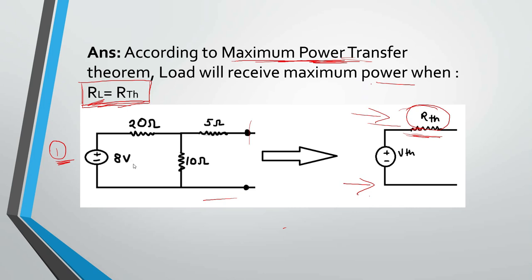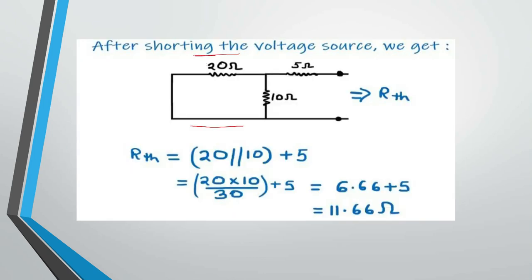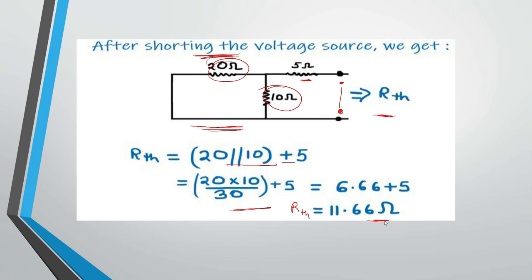The first step is to short all voltage sources and open all current sources. Since here there is only a voltage source, we will short this one. After shorting the voltage source we get this circuit, and now we calculate the resistance seen from the load terminal. RTH equals 5 plus the parallel combination of 20 and 10 ohms. Solving this gives RTH equal to 11.66 ohms, which is your equivalent resistance and the load resistance for maximum power transfer.